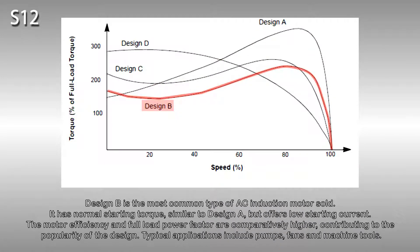Design B is the most common type of AC induction motor sold. It has normal starting torque, similar to design A, but offers low starting current. The motor efficiency and full load power factor are comparatively higher, contributing to the popularity of the design. Typical applications include pumps, fans and machine tools.